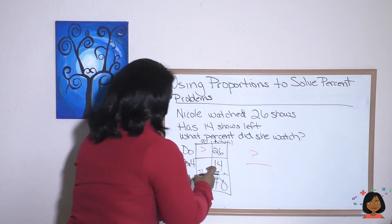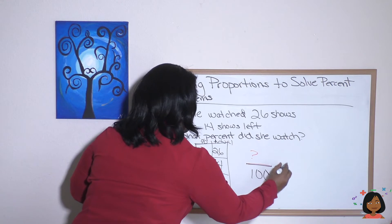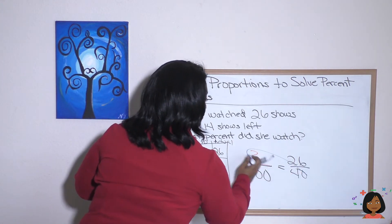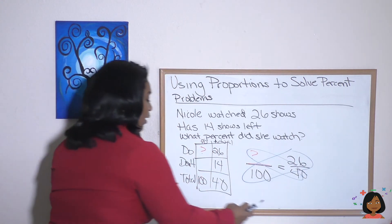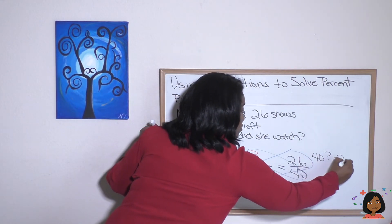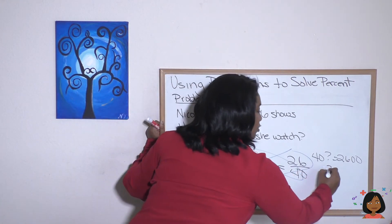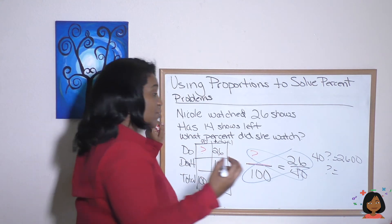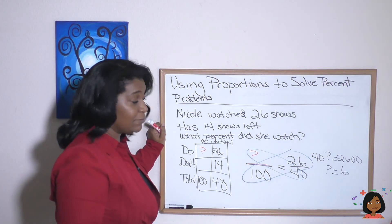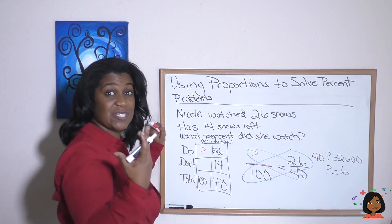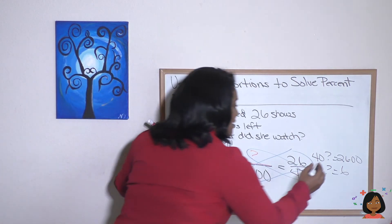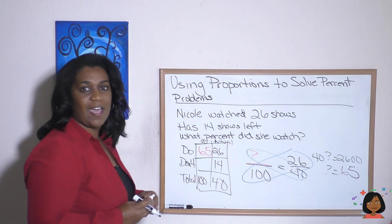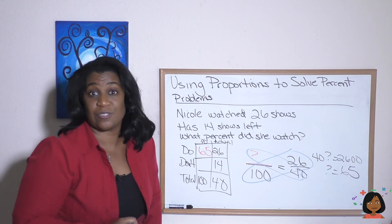We set up the proportion: question mark over 100 equals 26 over 40. Cross multiply: 40 times question mark equals 2,600. 6 times 40 is 240, so six is the first digit, leaving 20. Bring down the zero: 40 into 200 is five. So question mark equals 65, which means the do percent is 65. Nicole watched 65% of her shows — so she's got some TV watching to do this weekend!